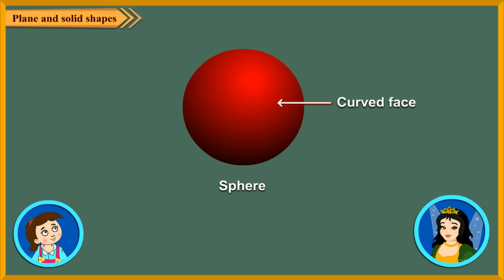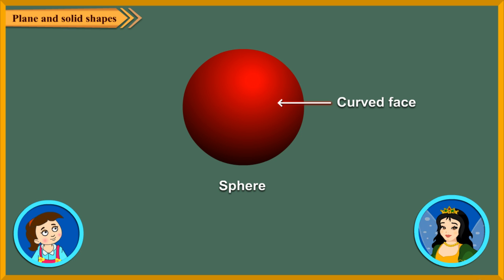Now observe this shape. It looks like a football. It has no vertex and no corners. It has only one curved face. Just as we have straight lines and curved lines, in the same way we have flat faces and curved faces. A solid slides through its flat face and it rolls through its curved face.